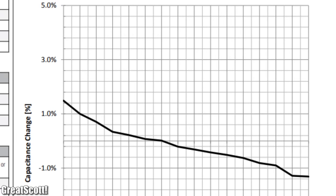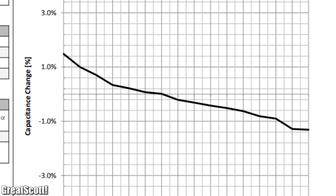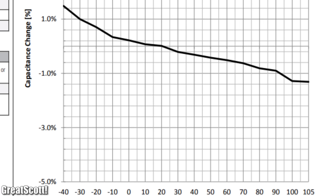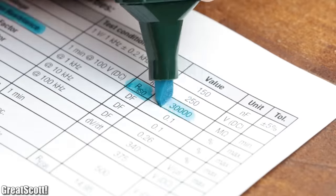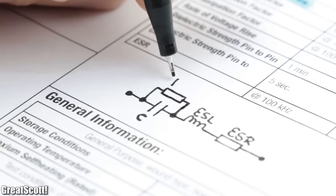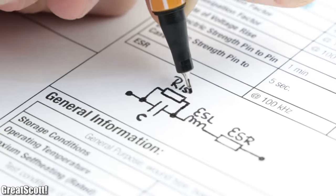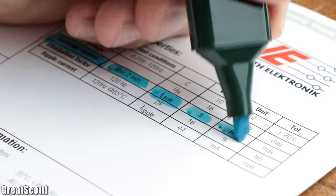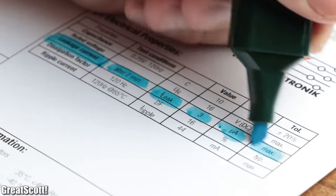Now of course, a capacitor datasheet, depending on its type, can give us even more information, like the insulation resistance, which basically sits in parallel to the actual capacitance, or the leakage current, whose name pretty much speaks for itself.